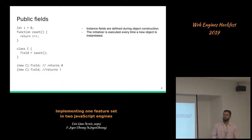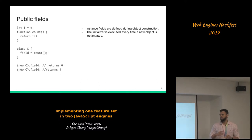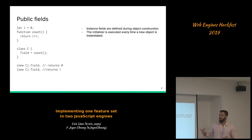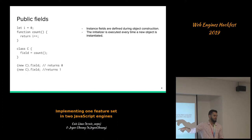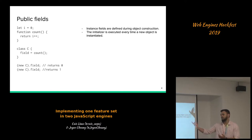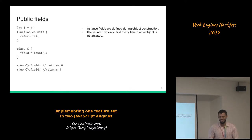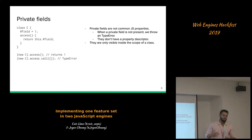Let's talk about what public fields are. This is what a public field looks like in JavaScript. In the class we have this new syntax where we have 'field equals count'. Count is a function that increments. For the first evaluation it returns 0, then 1. This means that the initializers of the class fields are executed every time a new object is created. The new object will contain a property named 'field' and the initializer will be evaluated and installed in every single instance.